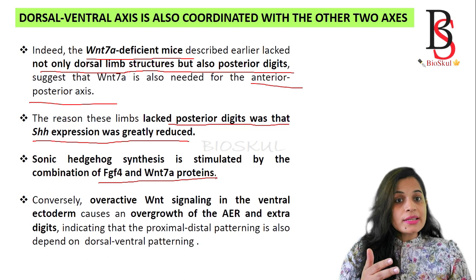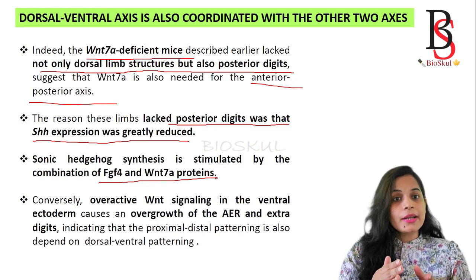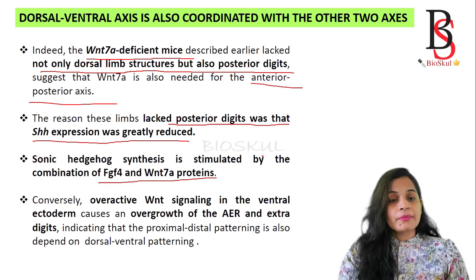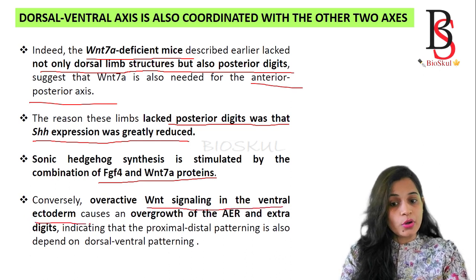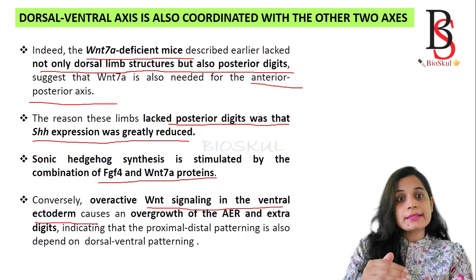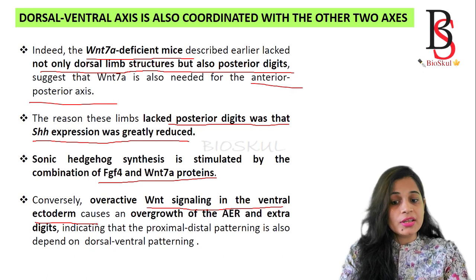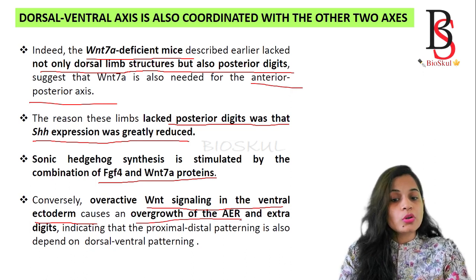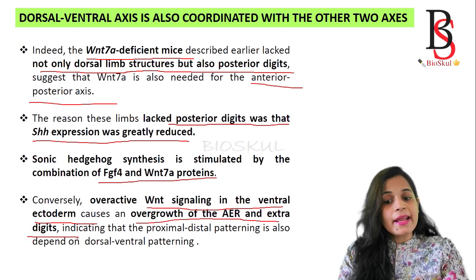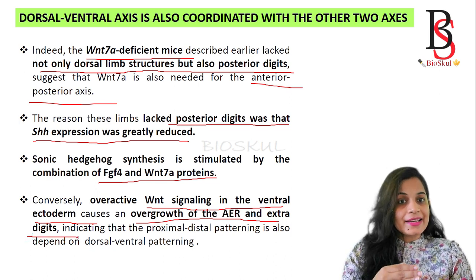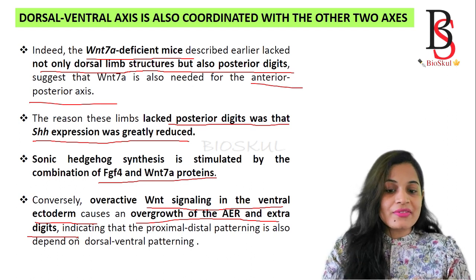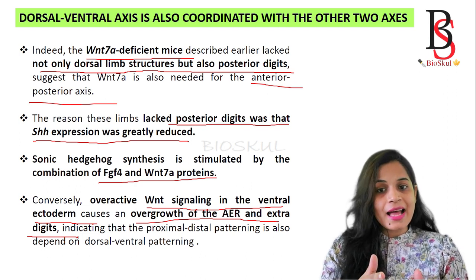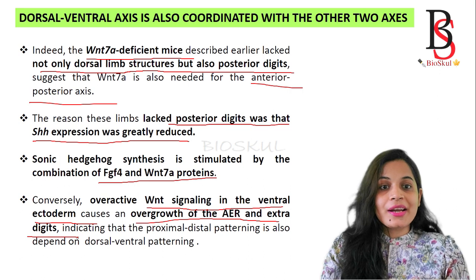Sonic hedgehog synthesis is stimulated by the combination of FGF4 and Wnt7a protein. So Wnt7a is required for both the dorsal-ventral axis and the anterior-posterior axis formation. Conversely, if Wnt signaling is overactive in the ventral ectoderm region, it leads to overgrowth of the apical ectodermal ridge and extra digits, indicating that proximal-distal patterning also depends on dorsal-ventral patterning. This is how the three limb axes are coordinated with each other.